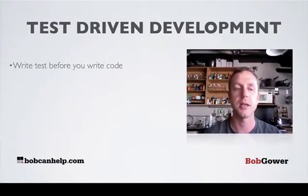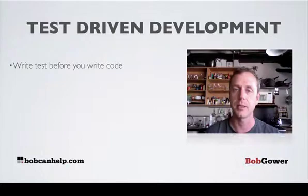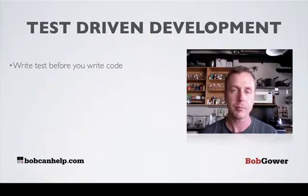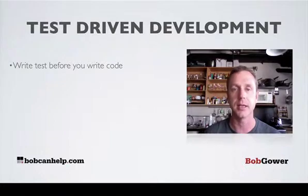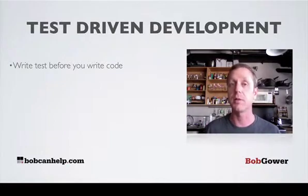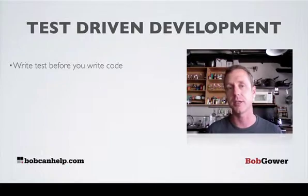What we mean by test-driven development is that they're going to write a test before they write the code. So before they start developing a feature, they're going to write a test. Software, when it's deployed, needs to go through a series of testing so we know that it all works. If you write an automated test — a test that can run automatically — it makes deployment that much faster, because you have to deploy the same code over and over again. As you fix things, you have to test that other stuff didn't break.